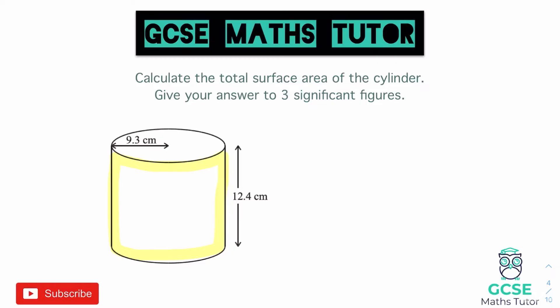Starting with the circles, since we've already been working those out, we should be able to get those done easily. For the area of the circle, it's pi r squared. So we're going to do pi times 9.3 squared, and that gives us the area of the circle. Writing that into our calculator gives us 271.716.